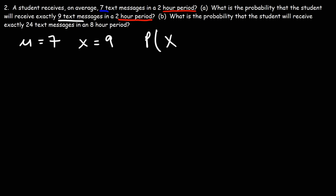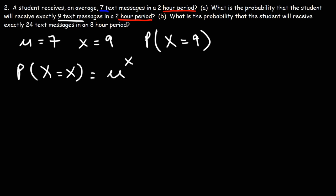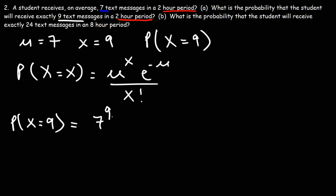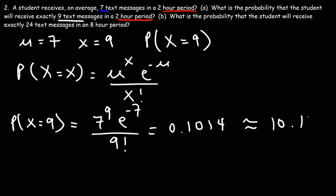We need to calculate P when x is 9. Using the formula — mu raised to the x, e raised to the negative mu, divided by x factorial — with x equal to 9 and mu equal to 7, this is 7 to the 9th power times e raised to the negative 7, divided by 9 factorial. Plugging that in, you should get 0.1014, which is approximately 10.14%. That's the answer for part A.